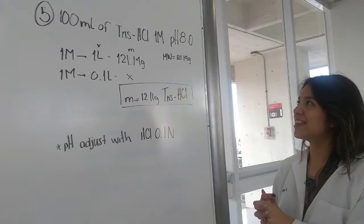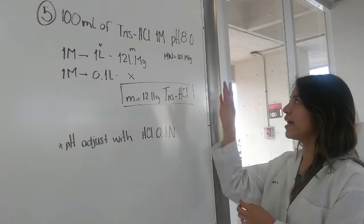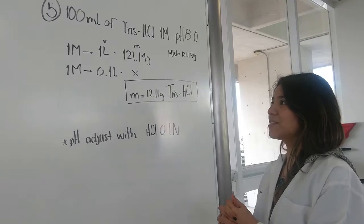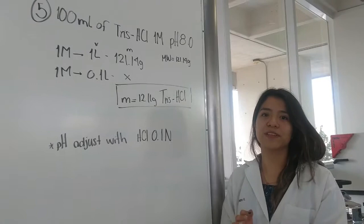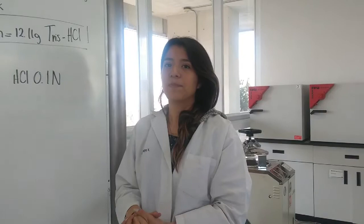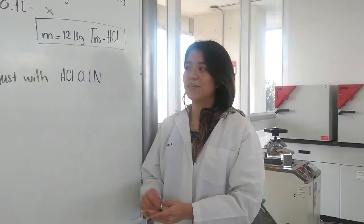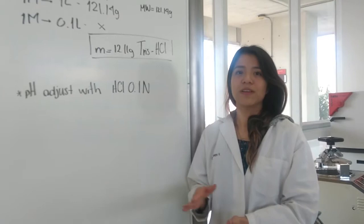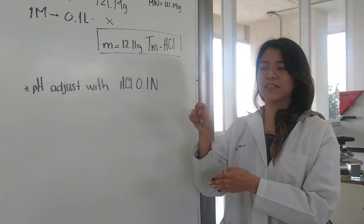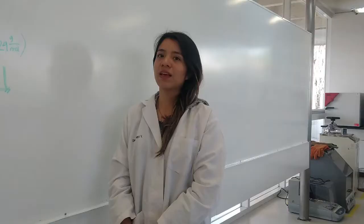For the next solution, we prepare 100 milliliters of Tris at 1 molar concentration. This solution requires pH adjustment to 8. We first calculate the grams of Tris needed using the standard protocol, then dissolve them in 100 milliliters of distilled water. The pH is adjusted using hydrochloric acid with a potentiometer: the solution is placed in a beaker and drops of hydrochloric acid are added until the desired pH is reached.